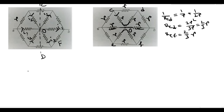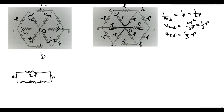Now if we draw the figure again: let this point be A and this point be B. There is a resistance r and r — that is 2r — directly between A and B. Another path goes from A to E (resistance r), then E to F (resistance 2r/3), then F to B (resistance r), giving r + 2r/3 + r. A third path goes from A to C (resistance r), then C to D (resistance 2r/3), then to B (resistance r), giving r + 2r/3 + r.